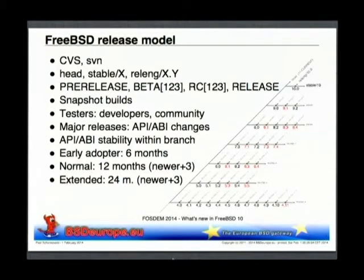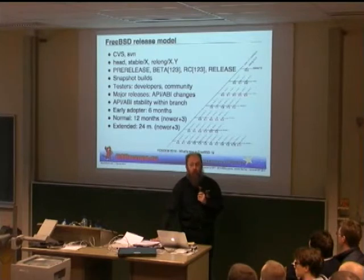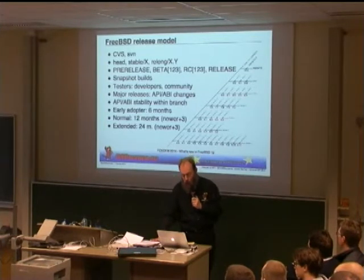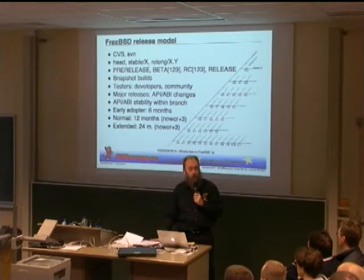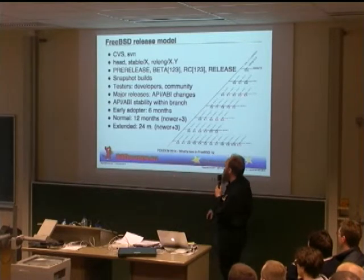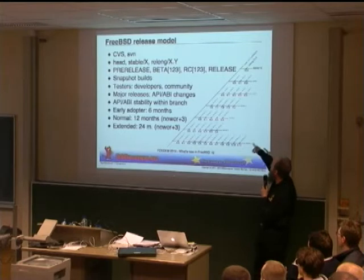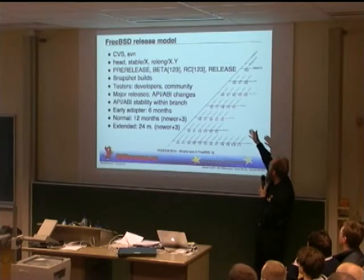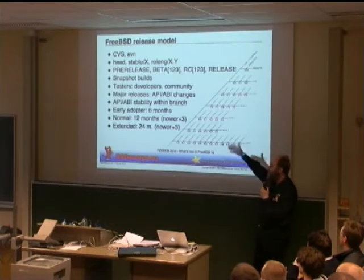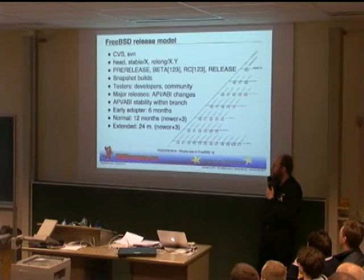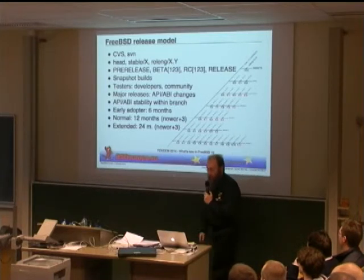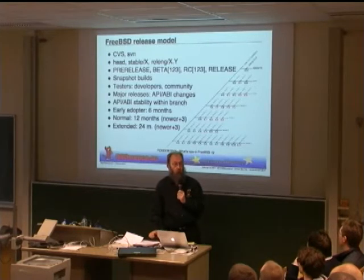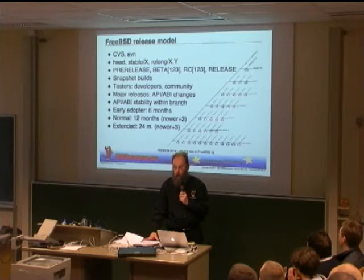The extended support releases get supported at least 24 months after the release date. So if you're running FreeBSD in a production environment and you do not want to upgrade your system once per year or more frequently, you can just hop between the extended support releases — for instance, from 8.1 to 8.3 or 8.4, then jump to 9.1, and most probably 10.1 will be another extended support release.